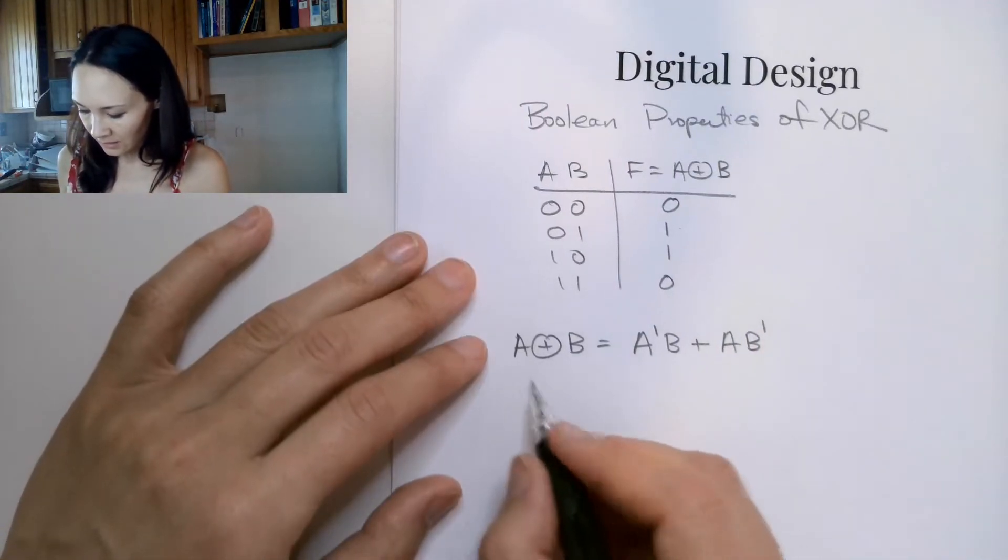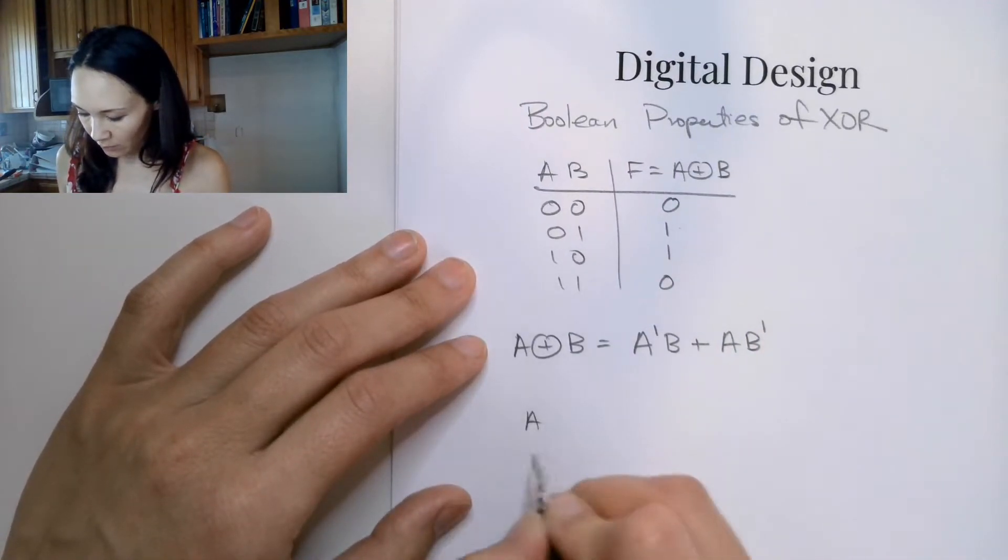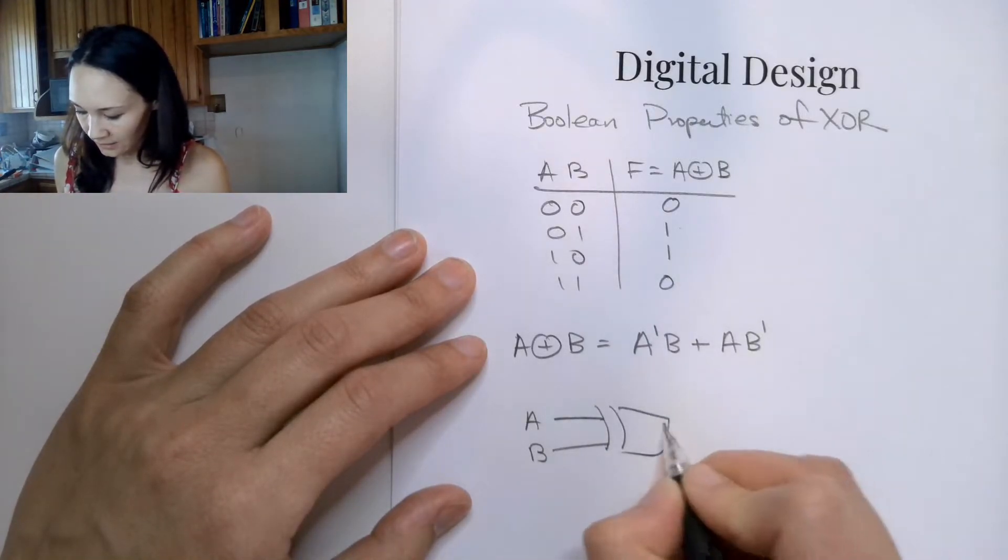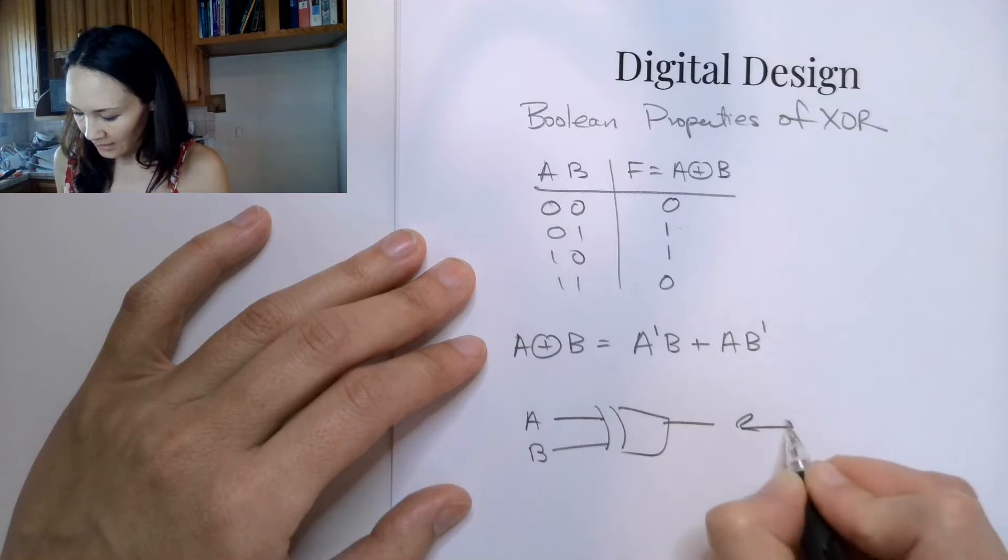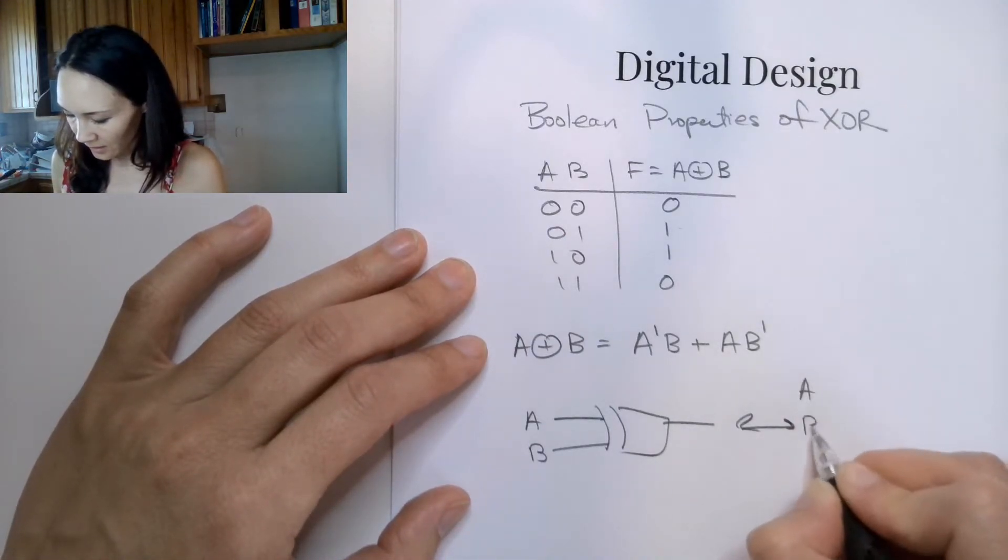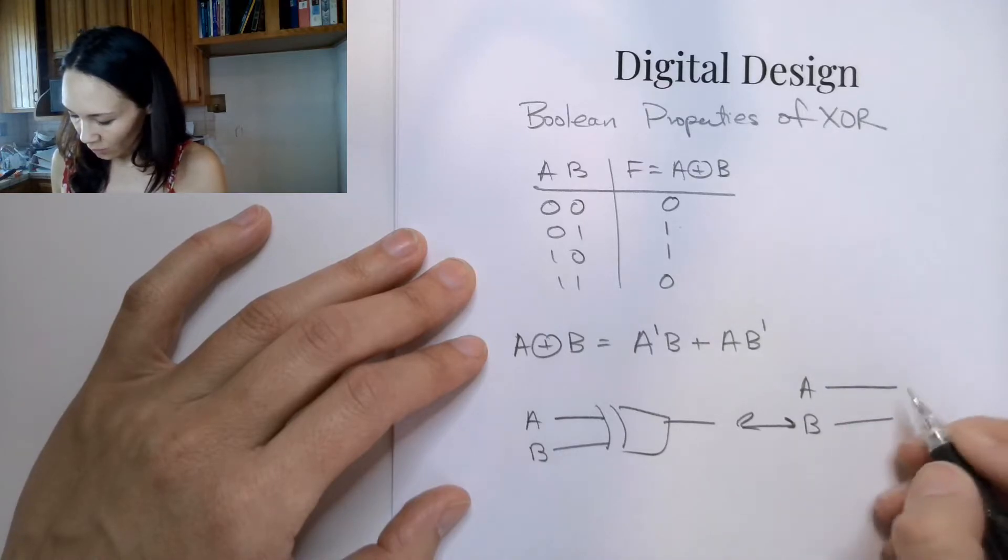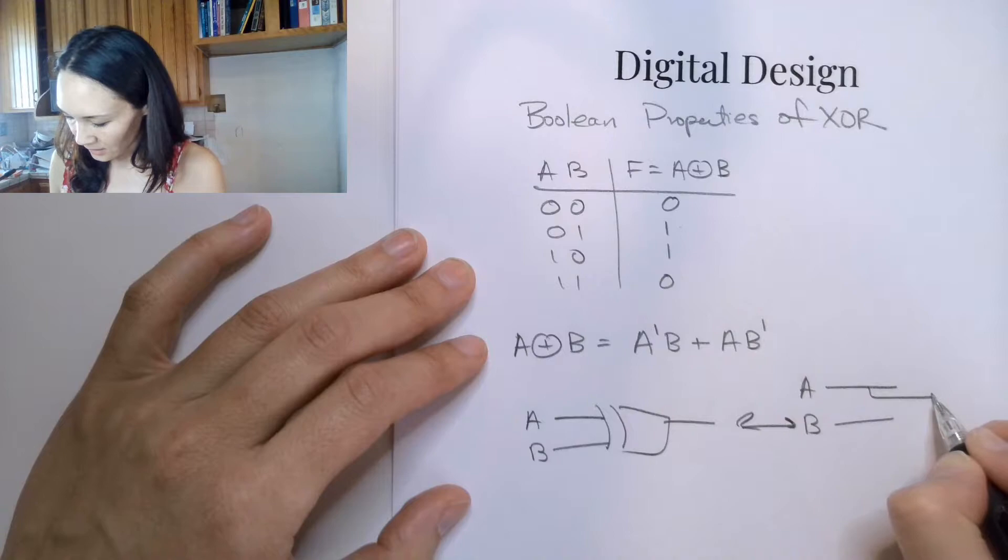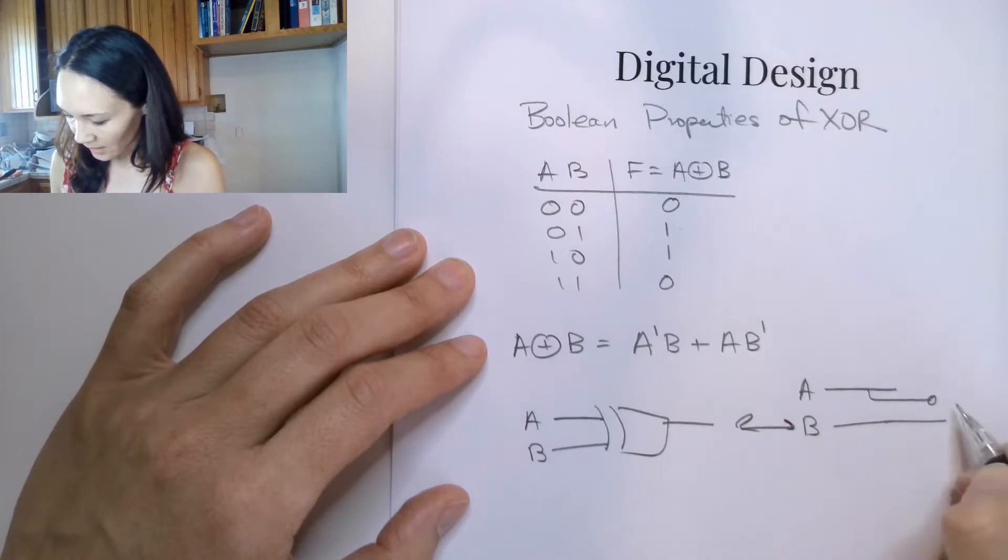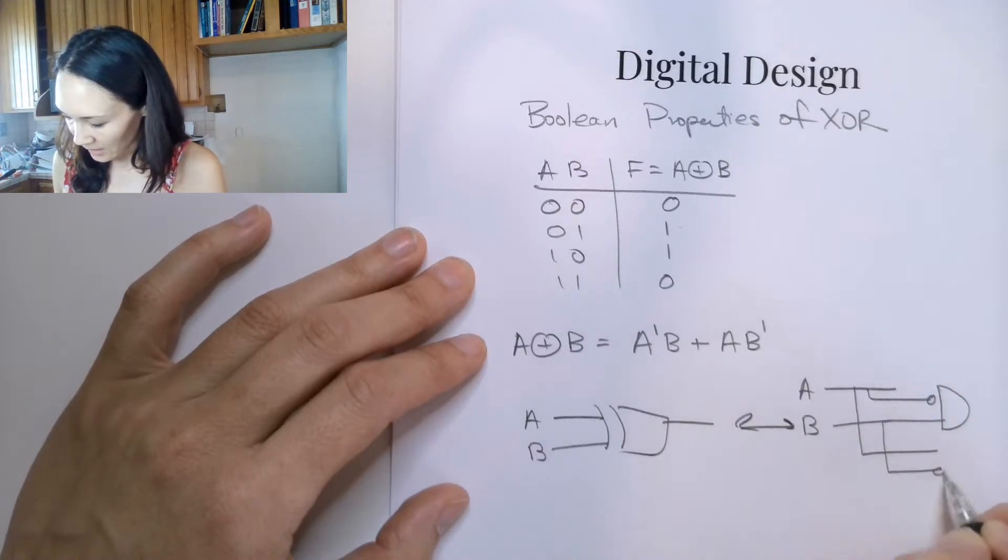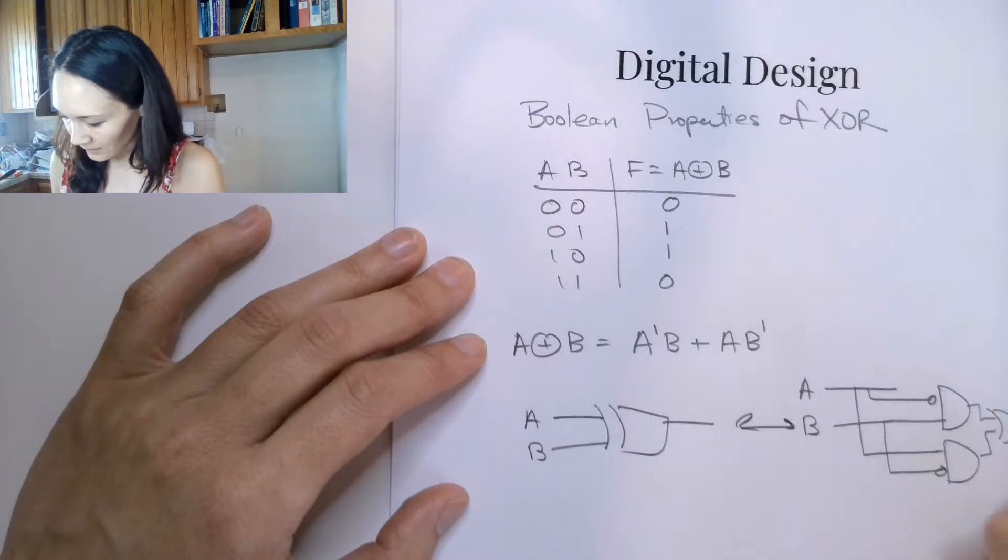Now, this means that if we have inputs A and B and these come into an XOR gate, we can replace this with a circuit that has A and B where if we take an A and invert it and and it with a B, and then we take an A and a B and invert it, take these results and or them together.